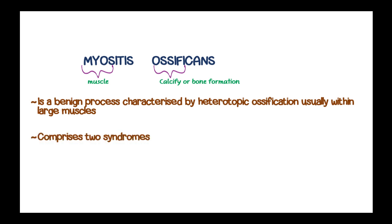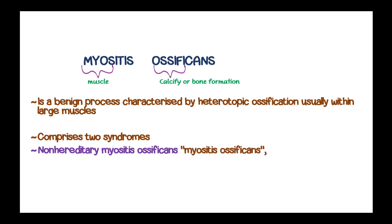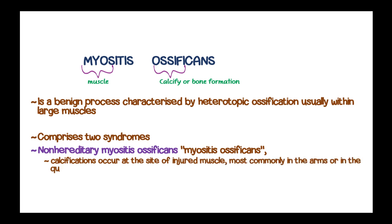It comprises two syndromes. The first is non-hereditary myositis ossificans, typically known as myositis ossificans circumscripta, where ossification occurs at the site of the injured muscle, most commonly in the arms or in the quadriceps of the thighs.